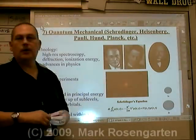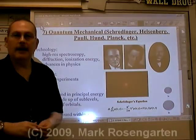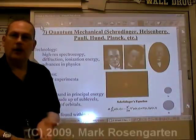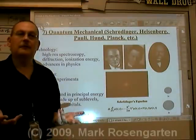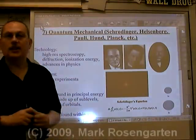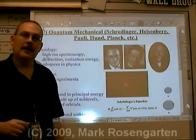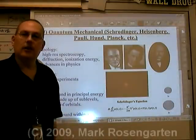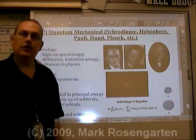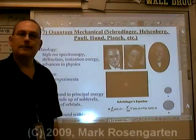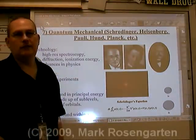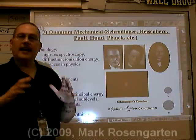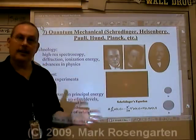Then along came Werner Heisenberg, who said the fact of the matter is that you can't know both where an electron is and where it's going at the same time, because any effort to determine one is going to change it. If you want to find out where an electron is, just trying to find out is going to change its location. And if you want to find out what direction it's going, any attempt to probe it will change its direction of motion.